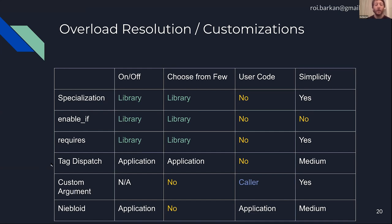The last three methods are different. Tag dispatch lets the application choose what to do — if I write my own iterator, I choose the iterator category for my container. Whether it's random access, forward, bidirectional, etc. Based on my choice, I put the tag on my objects and the library uses that to understand how to run algorithms on it. Medium simplicity, but gives more power to the caller.